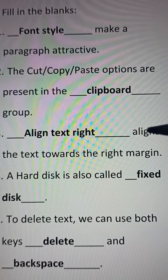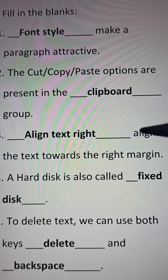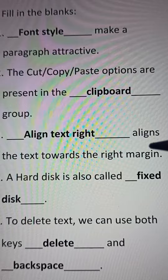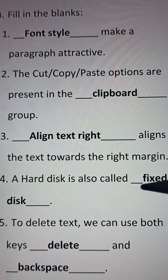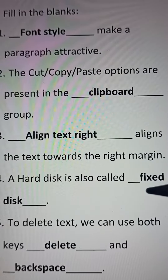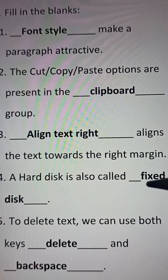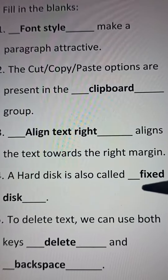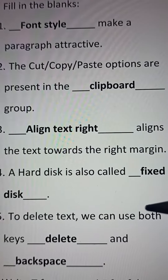Number three: dash aligns the text towards the right margin. Answer: align text right aligns the text towards the right margin. Number four: a hard disk is also called dash. Answer: a hard disk is also called fixed disk.